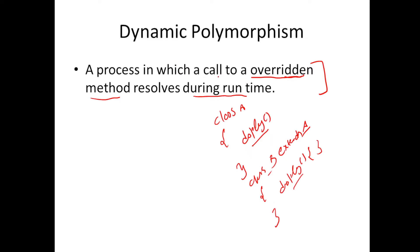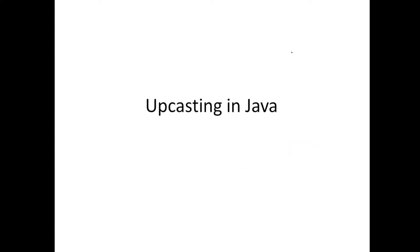This is a process in which a call to an overridden method results during runtime. So when I am calling the display method, which version of that overridden method should be called will be resolved at runtime. I know this is difficult to understand with theory alone. Let's understand one important concept — upcasting in Java — to understand dynamic polymorphism. When you talk about dynamic polymorphism, this concept of upcasting is used.